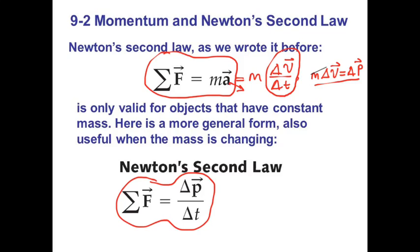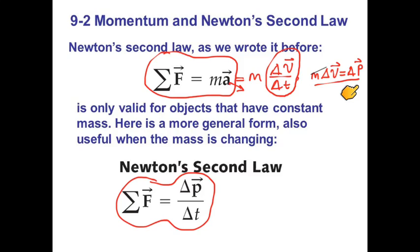If you use the definition of acceleration in this equation — acceleration is the change in velocity divided by the time that change happens, delta V divided by delta T — then M times delta V divided by delta T shows that the numerator is nothing but the change in momentum. Delta V is V final minus V initial, and if you multiply by M, you get P final minus P initial, which is the change in momentum.